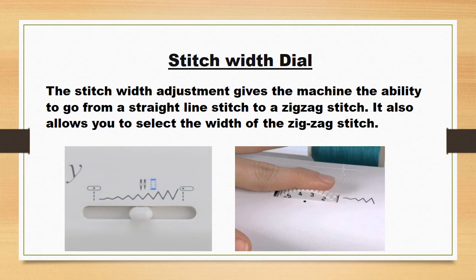Stitch Width Dial. The stitch width adjustment gives the machine the ability to go from a straight line stitch to a zig-zag stitch. It also allows you to select the width of the zig-zag stitch.